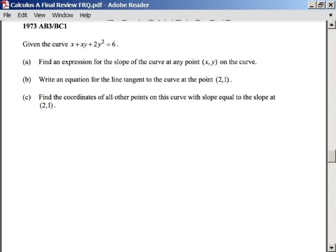Okay, for this problem, 1973 AB3 BC1, we're given this curve, and we're going to find the expression for a slope, probably like a formula I guess, for any curve at the point, or for the curve at any point x, y. So that's pretty much just taking the derivative of this. We know that a slope formula is f prime, or y prime.